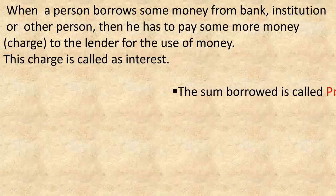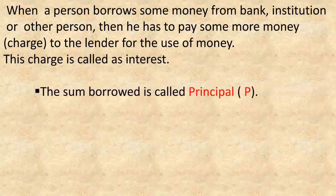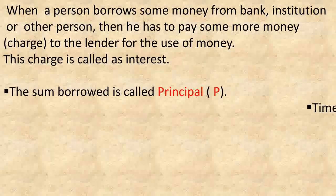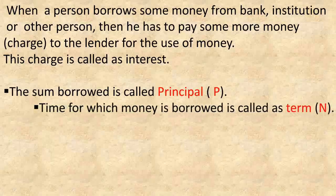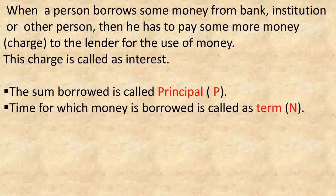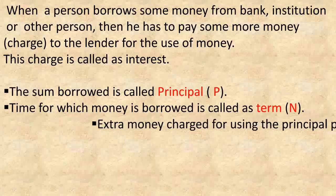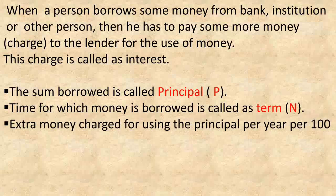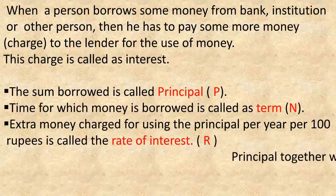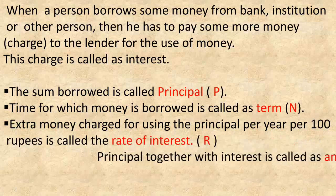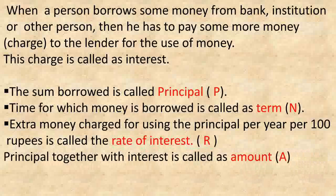The sum borrowed is called the principal, noted by P. The time for which the money is borrowed is called the term, noted by N. The extra money charged for using the principal per year per 100 rupees is called the rate of interest, noted by R. Principal together with interest is called the amount, noted by A.